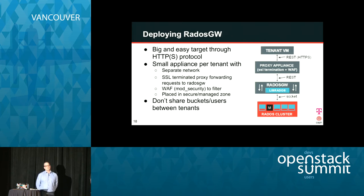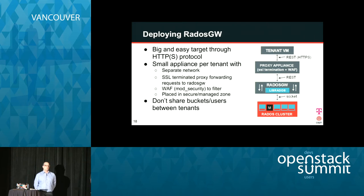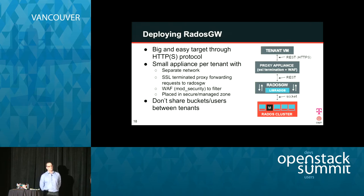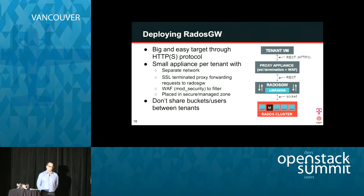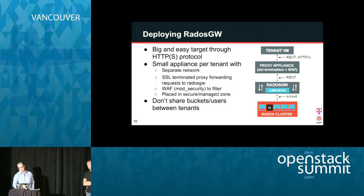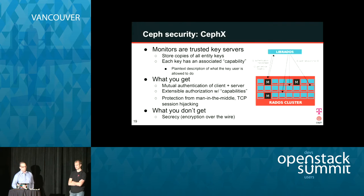Within the proxy, we run a web application firewall — in this case, mod_security — to make sure that the user can only send API or REST calls to their own user and their own buckets, and to filter out other things. This is a service from the infrastructure, running in a secured or managed zone that is not part of the other zones where the tenant is running. It's very crucial that you don't share buckets and users between tenants — you can share within the tenant, but not to the outside.